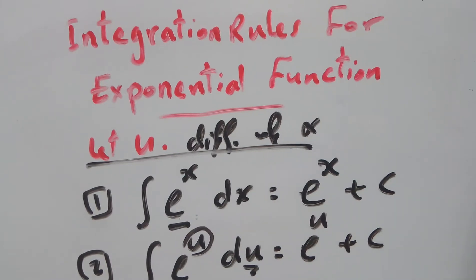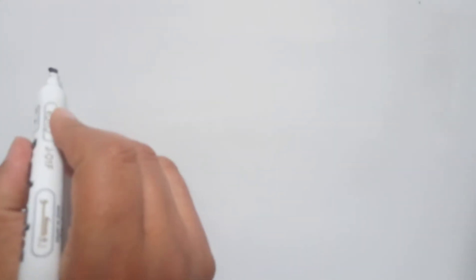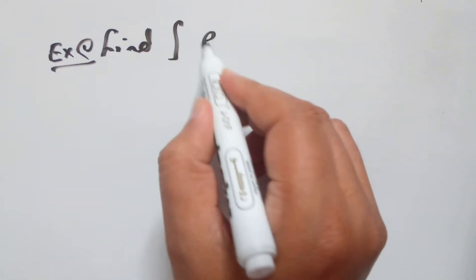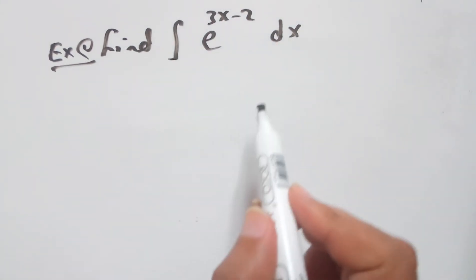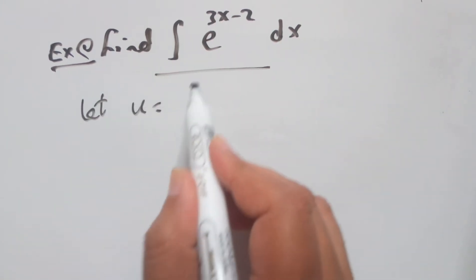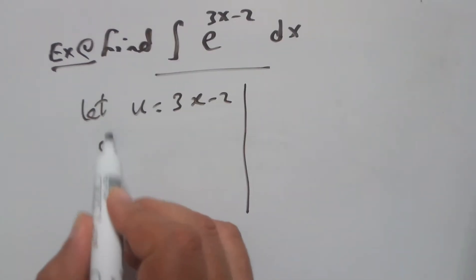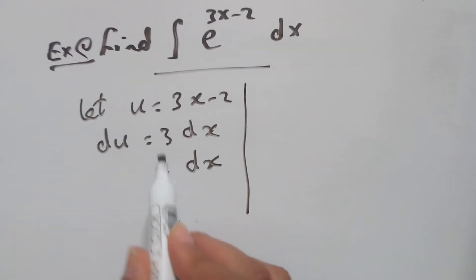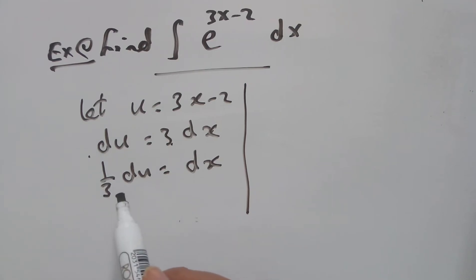How to use these rules? Example 1: find the integral of e to the power 3x minus 2 with respect to x. Here, you can let u equal to 3x minus 2. This means du equals 3 dx, and dx equals one-third du, by dividing both sides by 3.